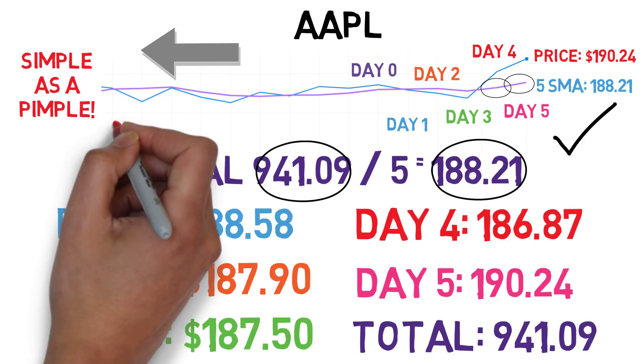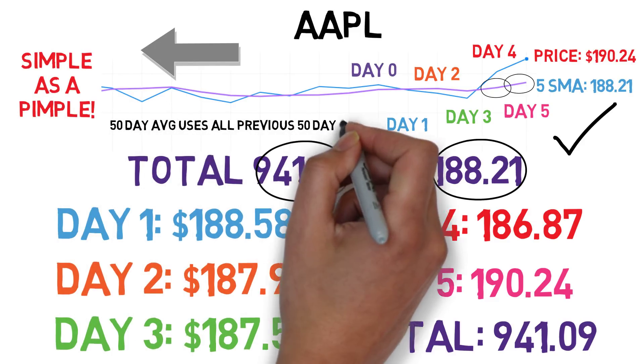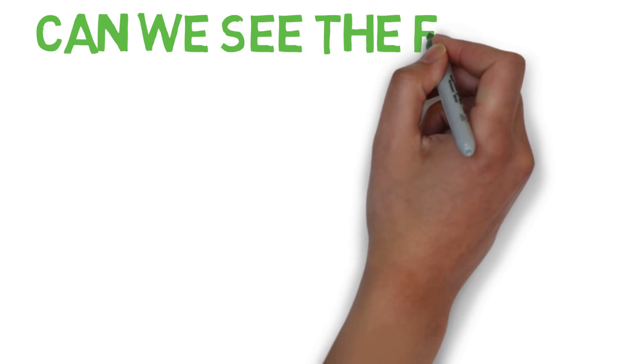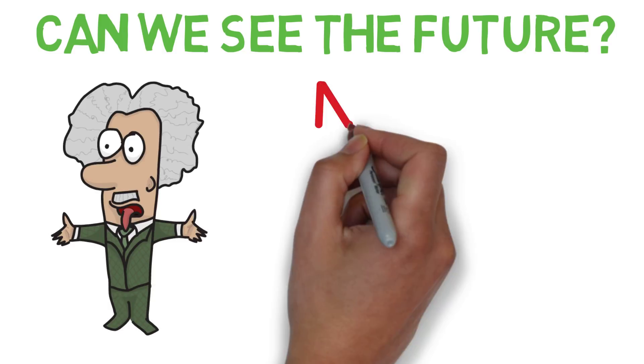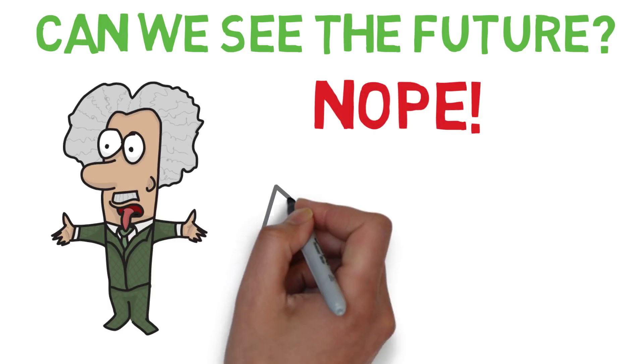If we set it to a 50-day average, it'll use all 50 days of Apple's prices to get the average. Now we know where these numbers come from. How can we use it to predict stock movement? You must understand that since we're only using past prices of stocks, we can't really predict future prices. Nothing can do this.